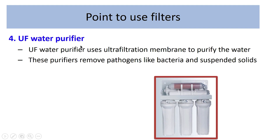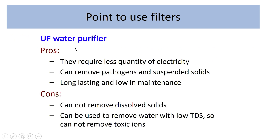Ultrafiltration water purifiers use an ultrafiltration membrane to purify water, removing pathogens like bacteria and suspended solids, but cannot remove total dissolved solids or toxic ions. Advantages: requires less electricity, can remove pathogens and suspended solids, long-lasting, low maintenance. Disadvantages: cannot remove dissolved solids, can only be used for water with low TDS.